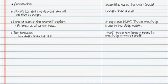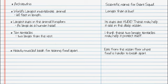Back to the left column: heavily muscled beak for tearing food apart. On the right, I'm going to write: eats from the ocean floor, where food is harder to break apart.